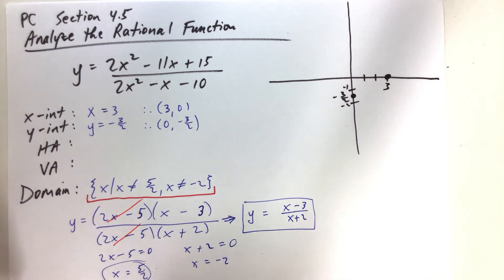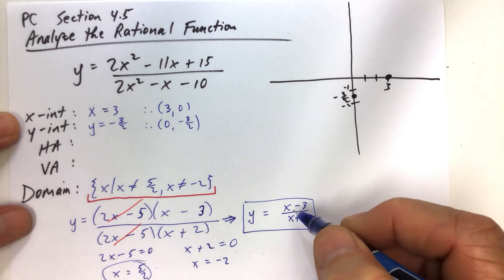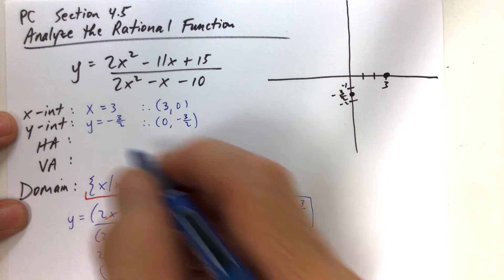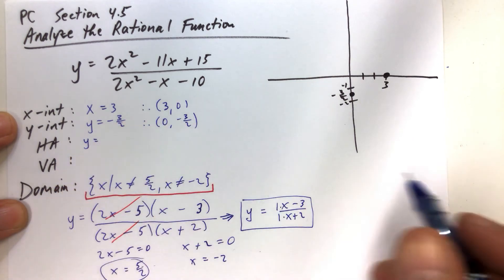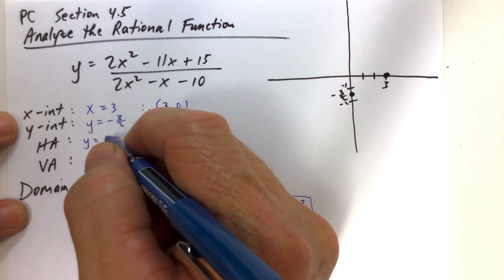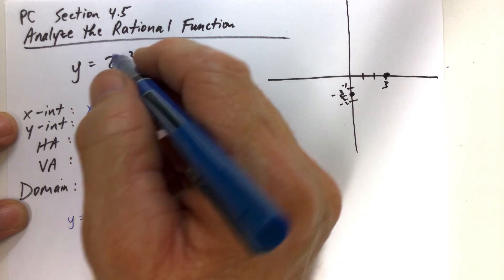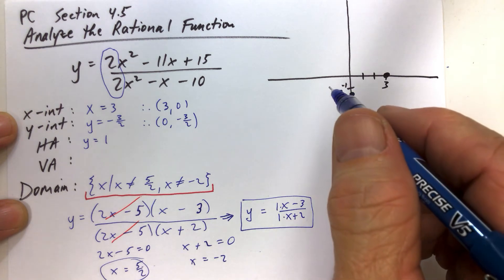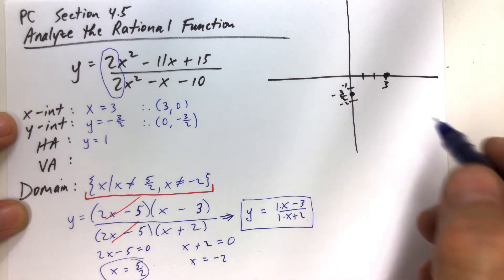And then let's find our horizontal asymptote. So we find our horizontal asymptote by identifying what the bubbles are. Bubbles are the same top and bottom. So we peel off the coefficients. And so we see that the coefficients are 2 over 2 or 1 over 1. And so we get y equals 1. So 2 over 2 is 1 over 1, which is 1. So y equals 1 is the horizontal asymptote.